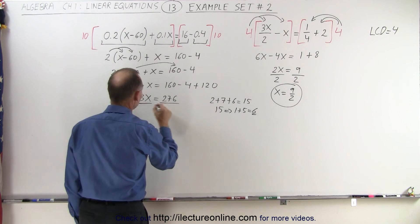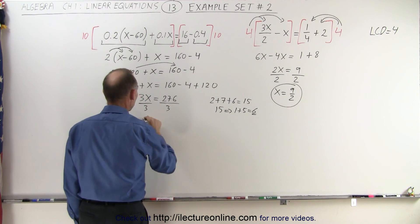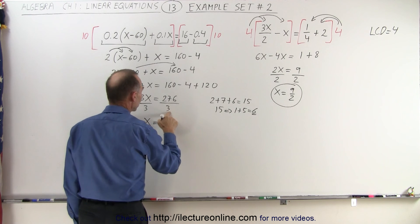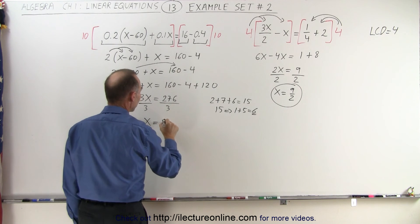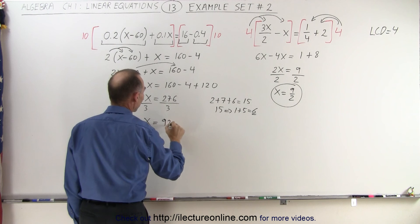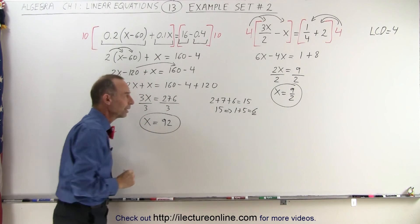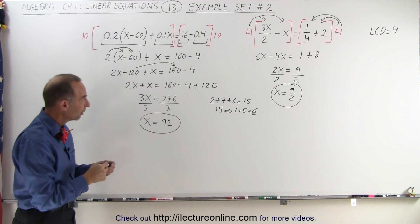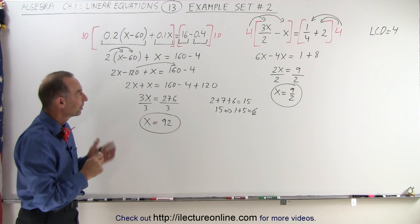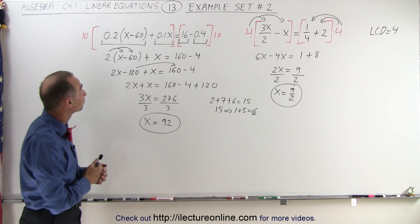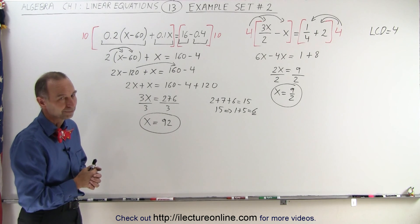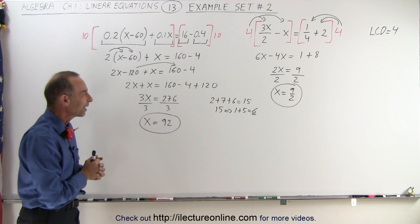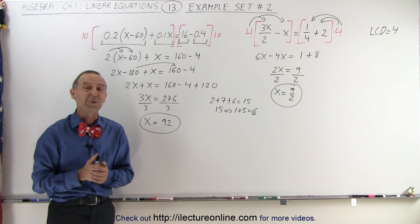So when I divide both sides by 3, I end up with x is equal to 3 goes into 27 nine times, and 3 goes into 6 two times, so x equals 92 is the solution for that. And that's how we take care of those two types of linear equations.